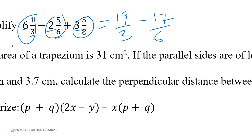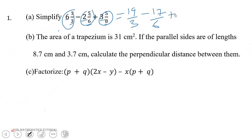So we find the LCM of 3, 6, and 8, which is 24. Now 3 goes into 24 how many times? 8 times. So you have to multiply the 8 by 19.